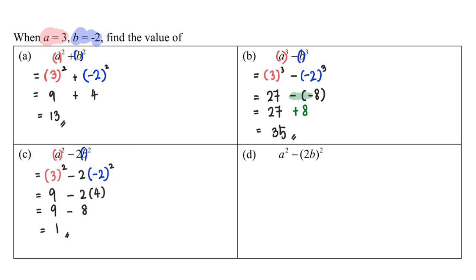And the last part of this question, part (d). You will see me repeating what I have mentioned: always put brackets. So this will be 3 squared minus bracket 2 times negative 2, squared.